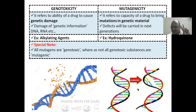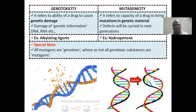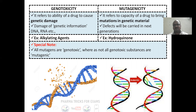Mutagenicity — it causes a mutation. It refers to the capacity of a drug to bring about mutation. DNA is mutated — changes will occur in the sequence of DNA. These drugs are dangerous because the defects will be carried into the next generation. A small change in the DNA leads to a big change in the organism, which can be very dangerous for the next generation.